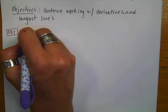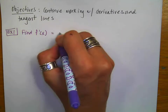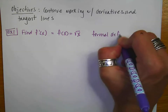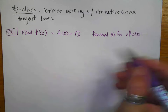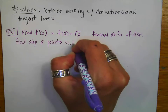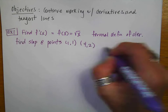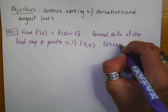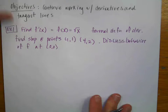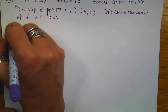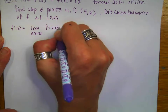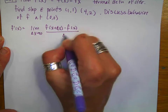For our first example, we want to find f prime of x — the derivative — for f of x equals the square root of x, using the formal definition of a derivative. Then we want to find the slope at the points (1,1) and (4,2), and discuss the behavior of the function at the point (0,0). I always write that the derivative f prime of x equals the limit as delta x goes to 0 of f of x plus delta x minus f of x over delta x.